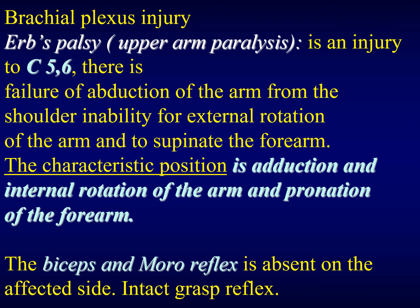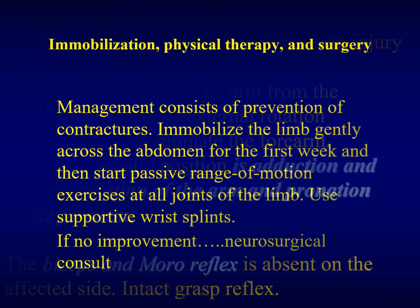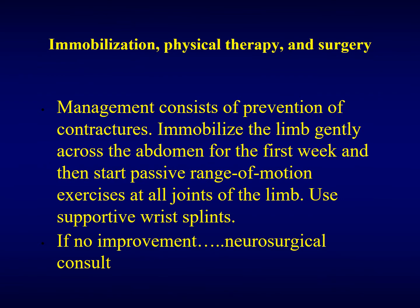We find that the biceps and brachioradialis reflexes are absent on that side. If the lower roots C7 and C8 are intact, the grasp reflex is preserved — because Erb's palsy impairs the arm, not the hand. Management consists of prevention of contractures. We immobilize the limb centrally across the abdomen for the first week, and then start passive range of motion exercises at all joints of the limb. If there is no improvement, we consult neurosurgery.